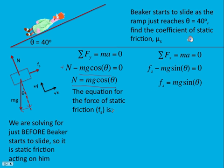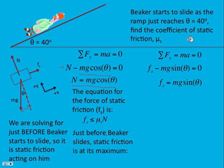And so we have an equation for the force of static friction. The force of static friction, remember, is only as big as it needs to be, and so it's less than or equal to mu static times the normal force. But in this problem, just before beaker slides, static friction is doing all it can to keep him from sliding, so it's at its maximum, and so it is equal to mu times the normal force.